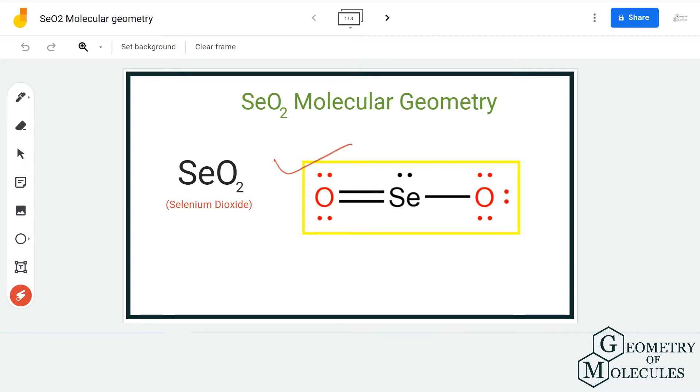So this is the Lewis structure of SeO2, in which the selenium atom is in the center and it is forming bonds with two oxygen atoms. There is a double bond between this oxygen and the selenium atom, and there is a single bond between this oxygen and selenium atom.